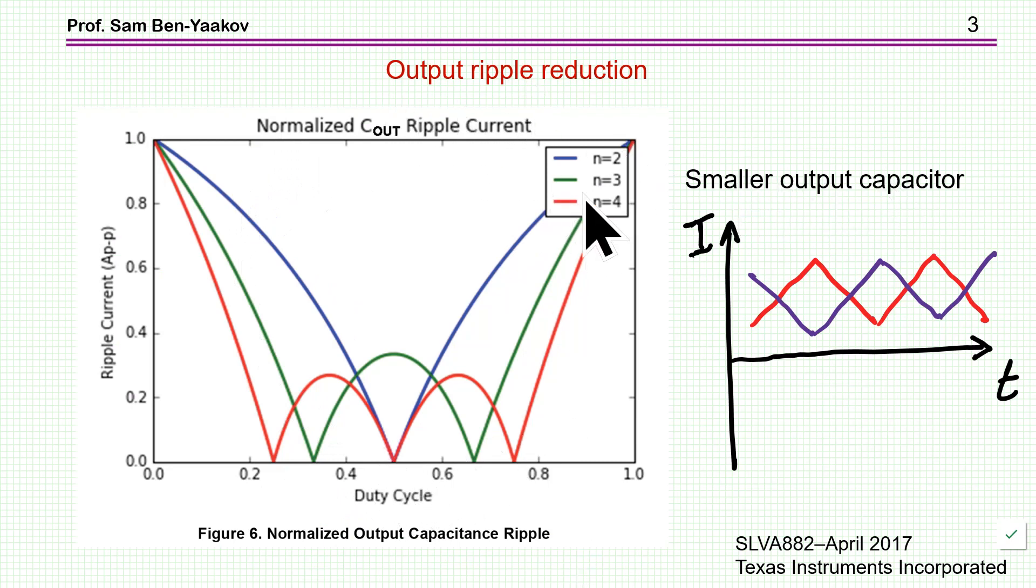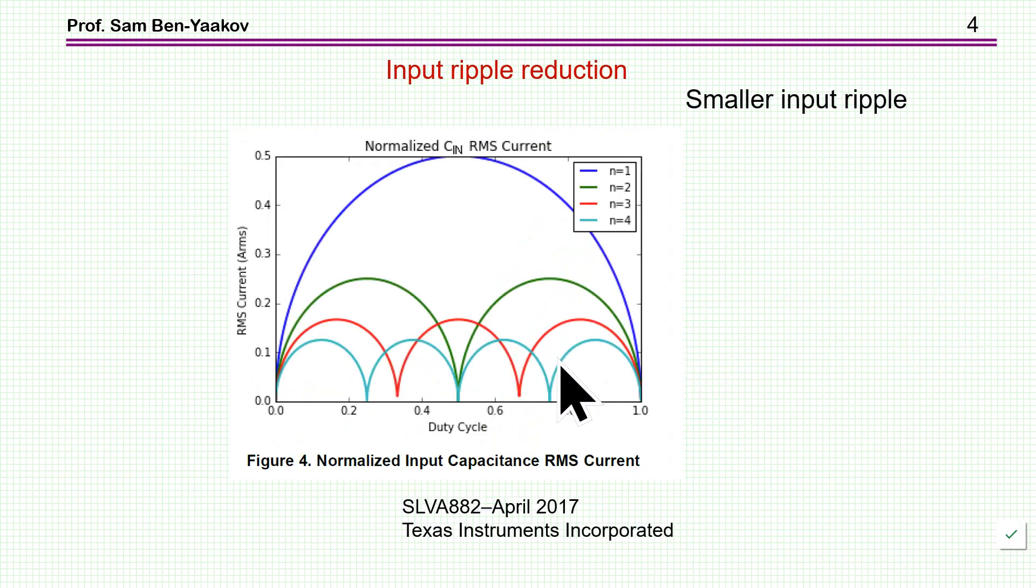We see that if you have like two phases, then at duty cycle 0.5 there is a complete cancellation because these two ripples are canceling one another. This will be the ripple of one inductor and the blue one of the other inductor, and they are of course canceling up. So this is an advantage, and the same thing goes for the input ripple. That is, the capacitor that you need at the input will be smaller proportionally because the ripple will be lower, and this again shows for a different number of phases.